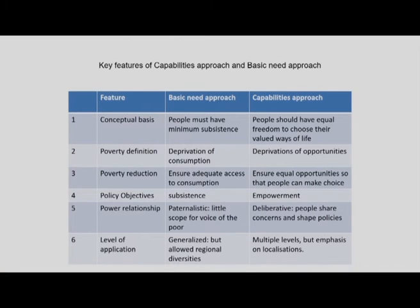To summarize the key features of the CA and the basic needs approach: in terms of conceptual basis, the BNA holds that people must have minimum subsistence — access to food, shelter, clothing, drinking water, and sanitation. The capabilities approach focuses on the fact that people should have equal freedom to choose their valued ways of life. The BNA's principle cannot deal with the problem a girl child faces when a social constraint prevents her from attending school, whereas the capabilities approach challenges those social arrangements and works toward providing equal freedom to choose valued ways of life.